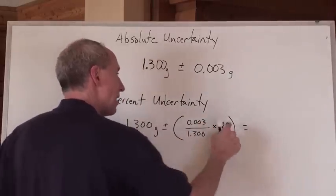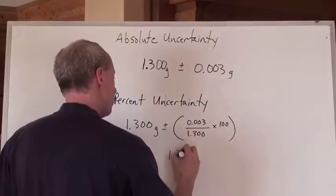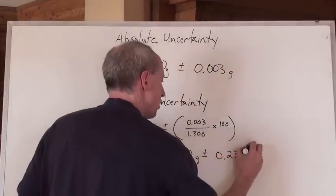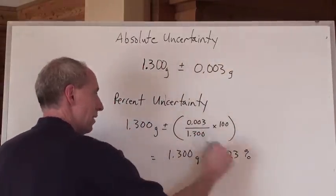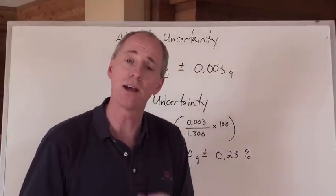And that means that the percent uncertainty here would be equal to 1.300 grams plus or minus, and when you do the calculation, you get 0.23 percent. So that's the percent uncertainty.